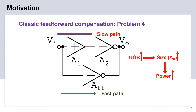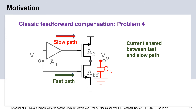Since the fast path sets the UGB, it is going to be power hungry. We use a separate amplifier for the fast path in a conventional feed-forward architecture. This is not optimal from an energy point of view. Thus, the last stage of the amplifier can be shared between the slow and the fast path, which optimizes the power consumption of the amplifier. However, we lose the class AB operation in doing so.